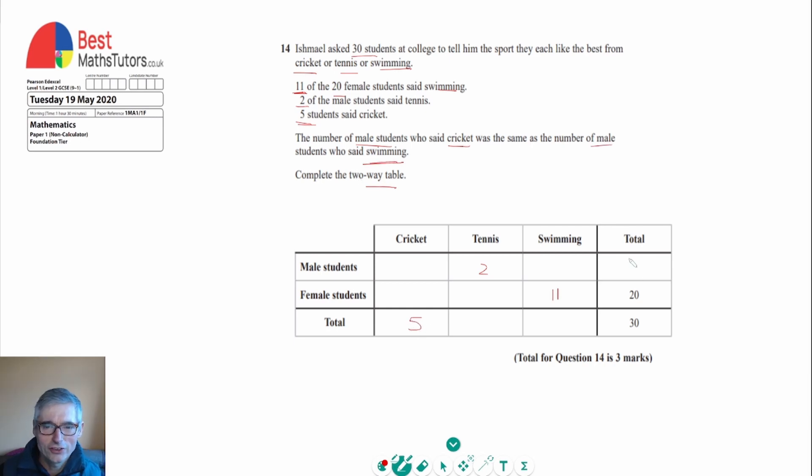To continue filling in the table, any column or row that has only got one thing missing in it we can actually fill that value in. We can see that because this total column here adds up to 30, then the values in it should add up to 30. So we can see that 20 plus the value here must make 30, so that means that must be 10.